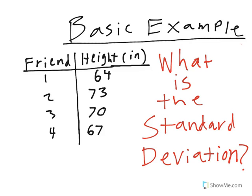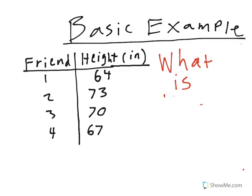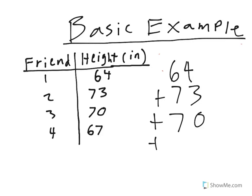First, to find the standard deviation, we will need to find the mean. This will help us in finding the variance. So let's start finding the mean. To find the mean, we add 64 plus 73 plus 70 plus 67.